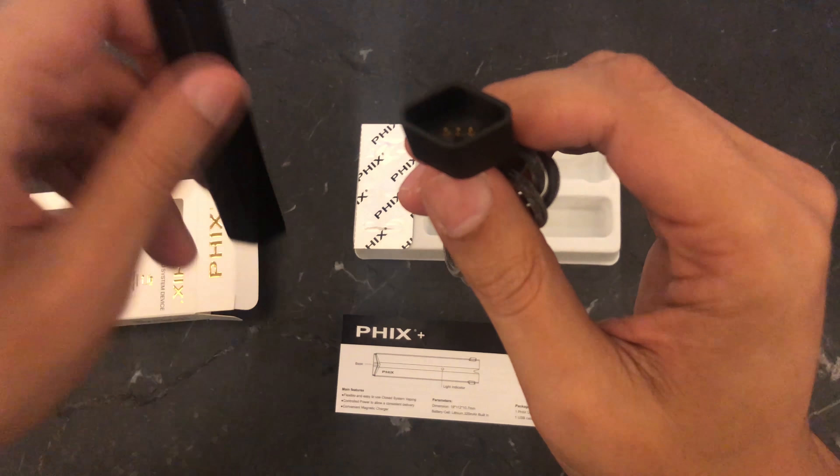It also shows here what the package includes, which is the Fix device, a USB charger, the original flavor which is the tobacco pod, and here you have your barcode and Fix logo. Let's open it up.